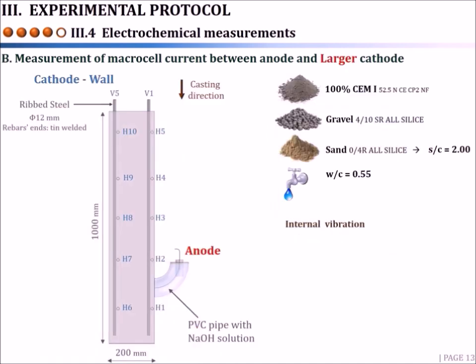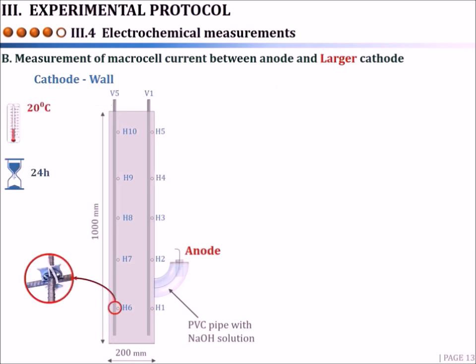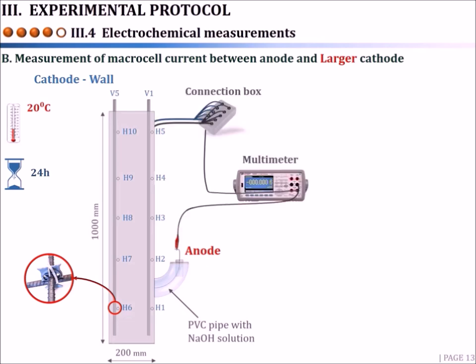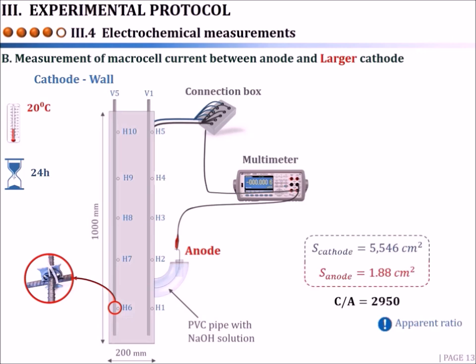The anode was then connected to a larger cathode, consisting of a reinforced concrete wall containing 18 ribbed steel bars with a diameter of 12 mm. The network of rebars in the wall was completely electrically disconnected but could be electrically connected from the outside using a connection box. The anode was placed in a PVC pipe containing a sodium hydroxide solution and could be electrically connected to the different rebars of the wall. When the anode is connected to all 18 ribbed steel bars of the wall, very high cathode-to-anode apparent ratios up to 3000 can be reached.